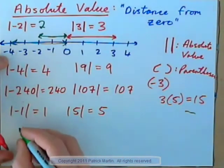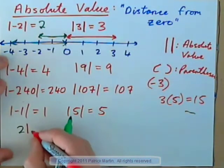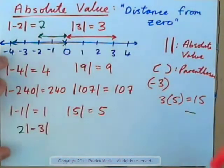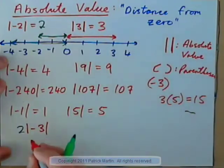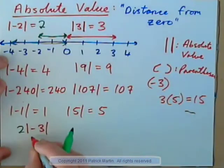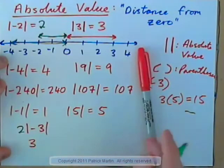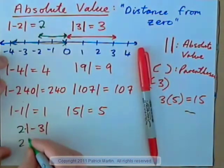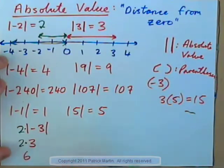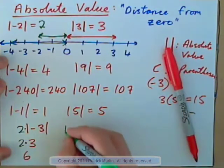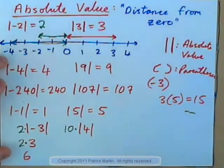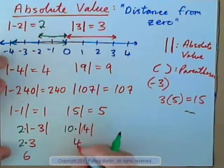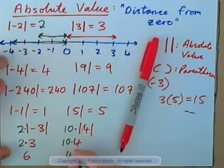We could have, for example, two times the absolute value of negative three, right? If there's a two beside it, that means multiply. Now, we should get the absolute value of negative three first. Absolute value of negative three is positive three. So what we have is two times positive three, which is six. So do this: ten times the absolute value of four. Well, the absolute value we should get first. Absolute value of four is four. Ten times that is just forty, right?